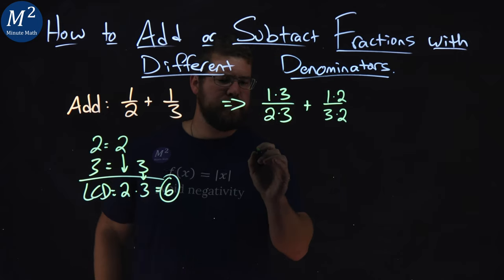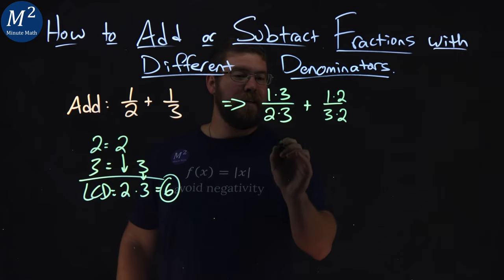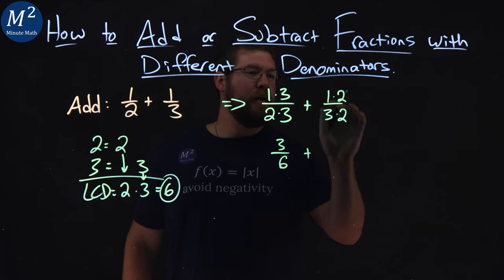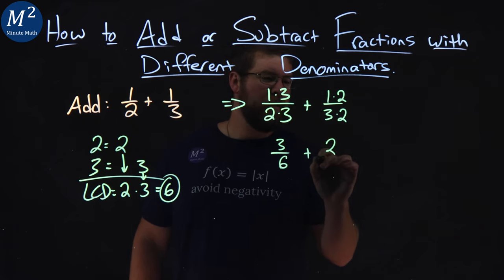Now let's simplify this. 1 times 3 is 3, and 2 times 3 is 6. 1 times 2 is 2, and 3 times 2 is also 6.